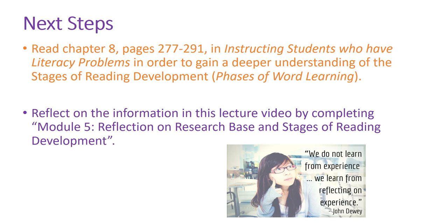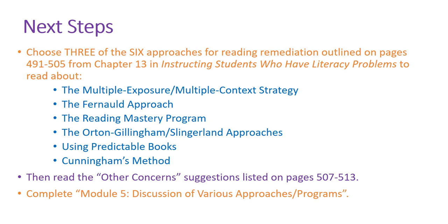Then complete the reflection on the research base and the stages of reading development for the coursework. The reading assignment for this week covers pages 491 to 505 in Instructing Students Who Have Literacy Problems, where six different reading program approaches are outlined. Pick three of the six to read about — any three you want. It will outline what's involved in those programs, and that's where you'll need that information on reading stages. Then read pages 507 to 513, which gives some other things to think about, and complete the discussion for this module.